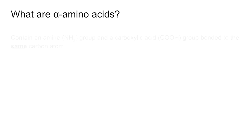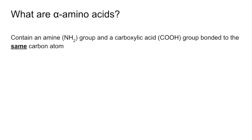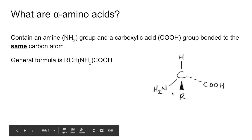So what are alpha amino acids? They contain an amine group, an NH2 group, and a carboxylic acid group, COOH, bonded to the same carbon atom. The general formula is RCH(NH2)COOH. It's easier to see the NH2 group, the amino group, and the carboxylic acid group bonded to that same carbon.